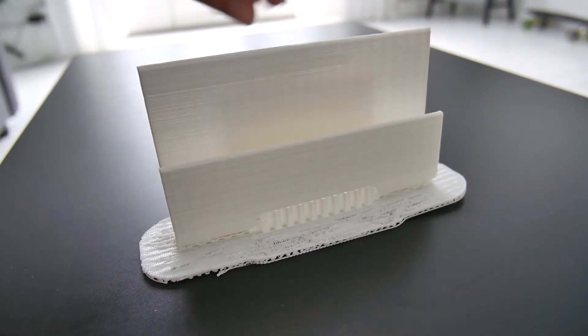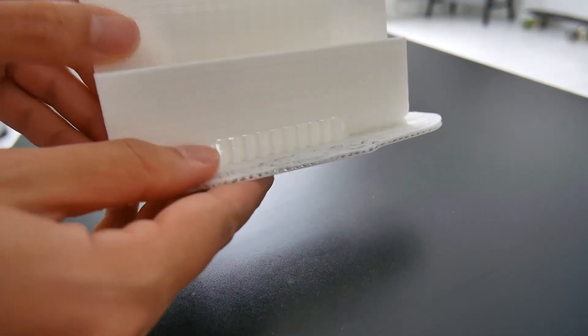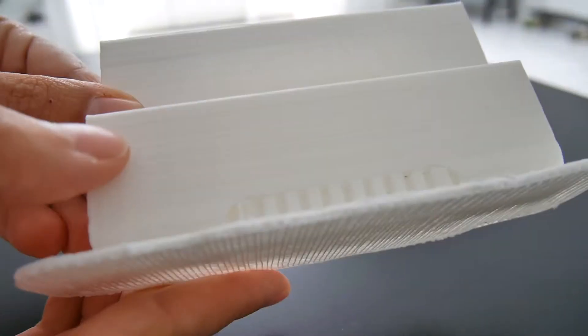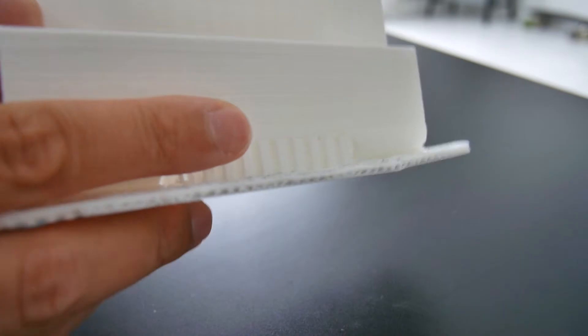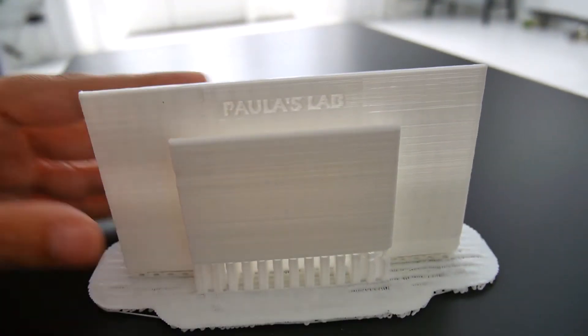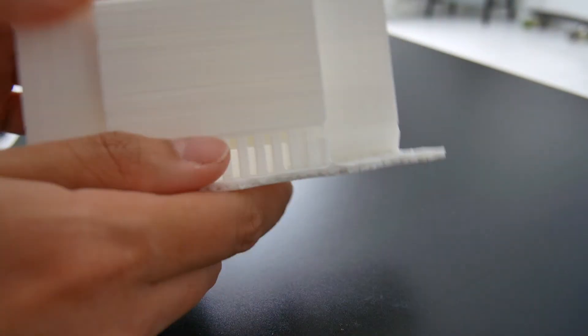The print is pretty okay. I think it's rougher than I usually print—this is 0.4 mm—but I got the name here in the back, that's pretty nice. Let's take the support off. Okay, so here it is.